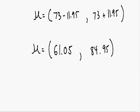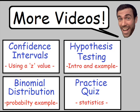So what does this mean? This means we are 99% confident that the true average test score is between 61.05 and 84.95. That is our confidence interval. For extra practice, I have another example using a z value — the link is in the top left corner.